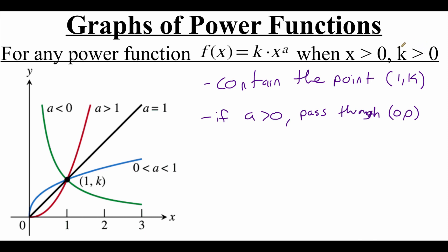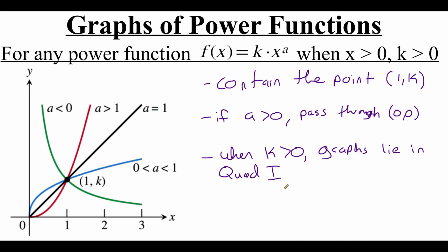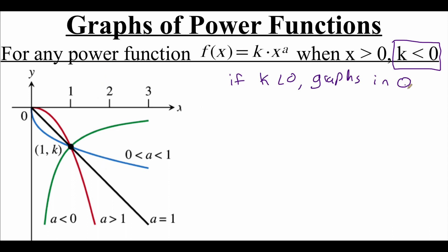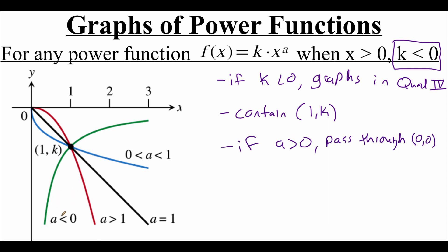One last property: focusing specifically on having k values that are positive, all of these graphs are falling in the first quadrant. Now if we shift and end up with a negative k value, we'll notice that our graphs have a lot of the same behaviors, except instead of happening in the first quadrant, now they're happening in the fourth quadrant. They all contain the point one comma k. The red, black, and blue graphs — where those a values are positive — are still passing through the origin. And our green graph, where we've got that negative a value, is still asymptotic to our axes, except it's going down and out to the right, following that y-axis and that x-axis.